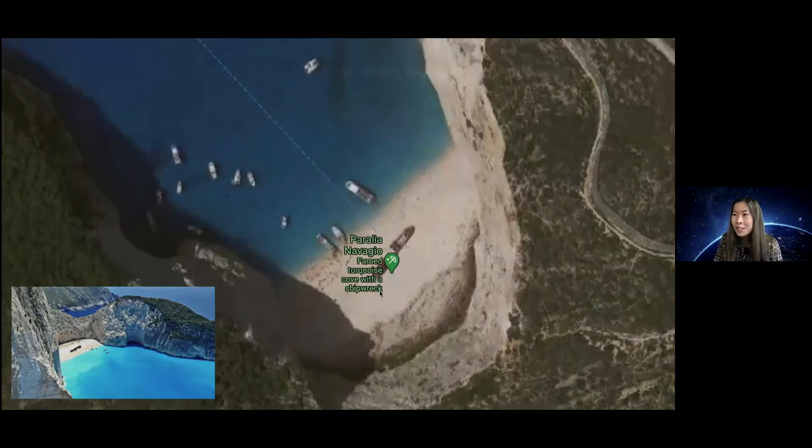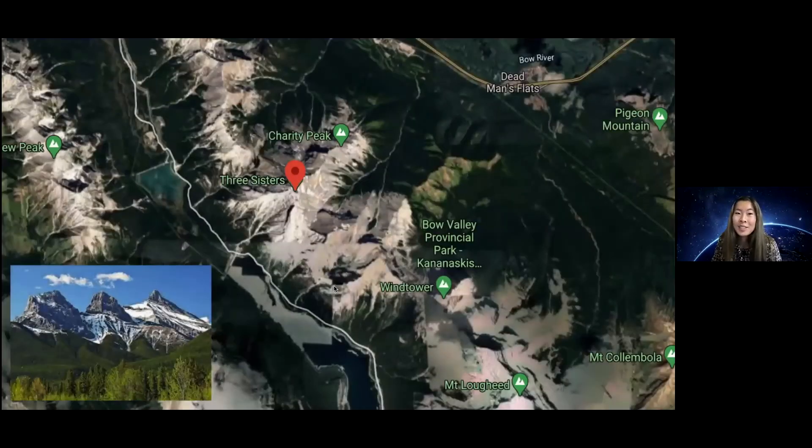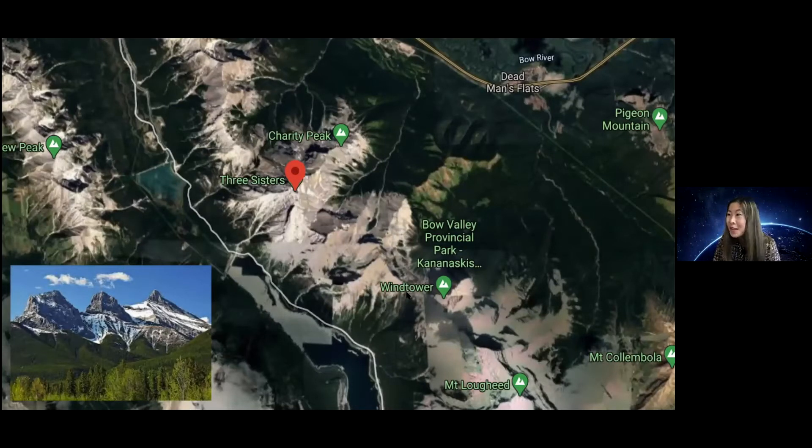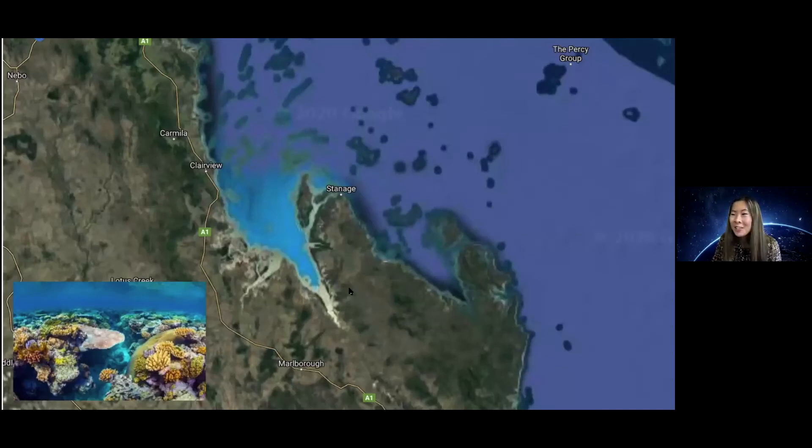Next up we have some gorgeous giants. These are the Three Sisters Mountains in Banff National Park. Stunning. Now we have the Great Barrier Reefs. See, Australia has stuff other than just fires. So beautiful, right? Some real bucket list type stuff.